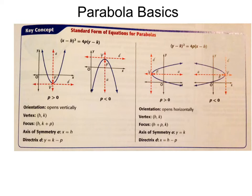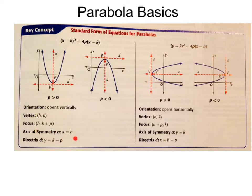The axis of symmetry is basically a mirror that's cutting your parabola in half — it's going to be symmetric on either side. When you have an x squared term, your parabola is opening up or down vertically, so you're going to need a vertical line — set x equal to your h value. When you have a y squared term, it's opening to the right or left, so you need a horizontal line — set y equal to your k value.